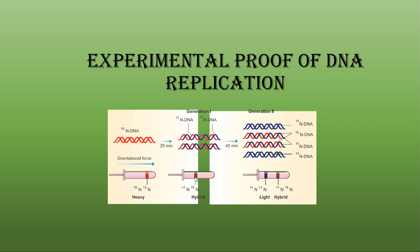The nitrogen-14 and nitrogen-15 hybrid forms an intermediate color like brown, and two bands are formed: one intermediate band and one with only the light isotope nitrogen-14. Nitrogen-14, being less dense, remains on the top of the test tube, while the intermediate band stays in the middle and appears light brown in color. We'll see this experiment step by step now.